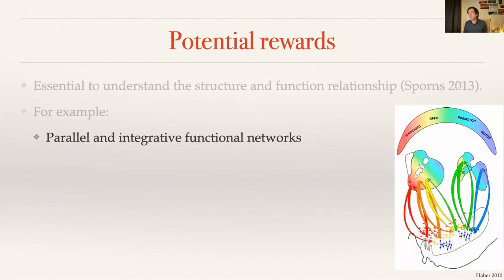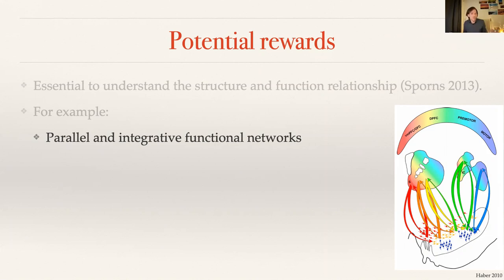A clear example, as I mentioned by referencing Suzanne's work, is thinking about parallel integrative information flows throughout the brain. You have specialized cortical areas that project downwards to the subcortex, where you either have separation or integration of information. That feeds back into the thalamus, which is then either specialized or not. So if you want to understand how this works, you need to look at both, and also at the connections in between.